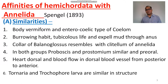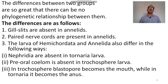Collar of Balanoglossus resembles the clitellum of Annelida. In both groups, proboscis and prostomium are similar to the pre-oral cavities. Heart dorsal; blood flows in dorsal blood vessel from posterior to anterior. Tornaria and trochophore larvae are similar in structure.